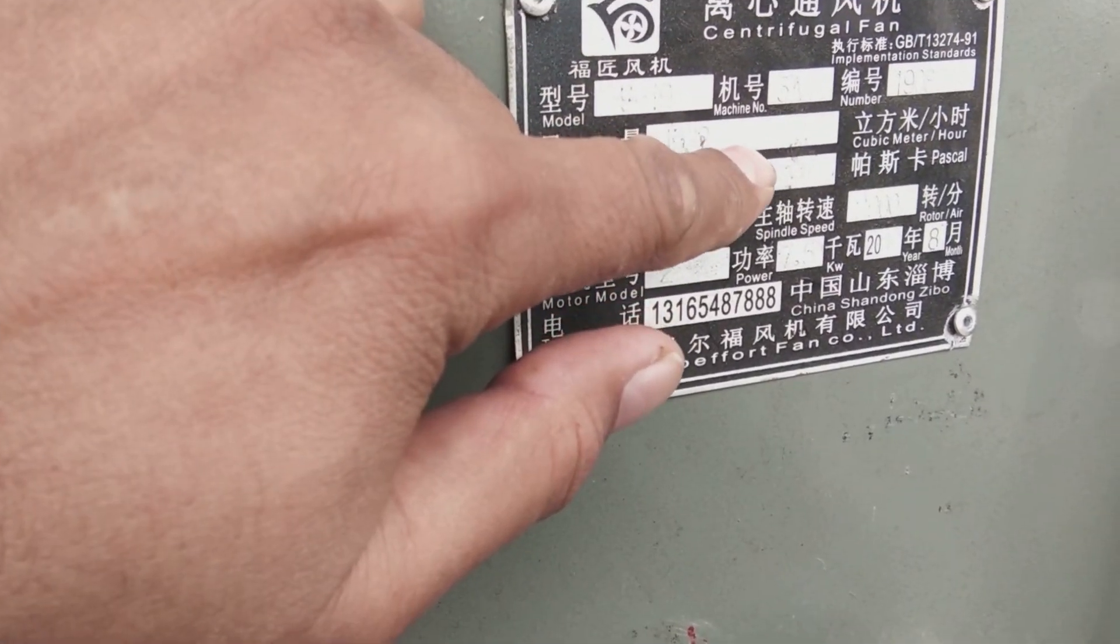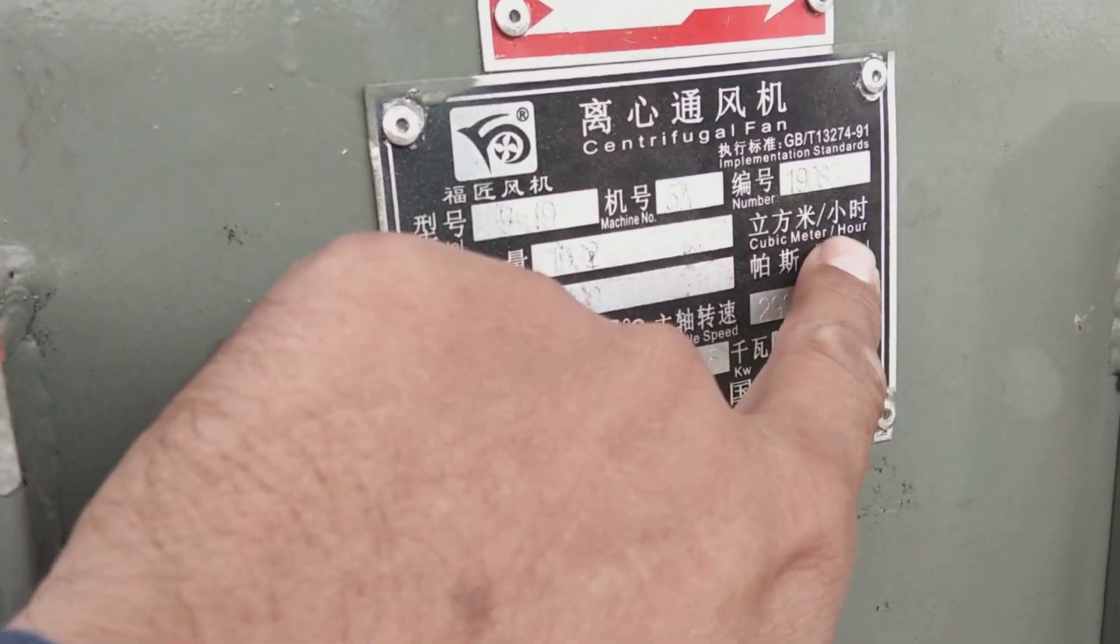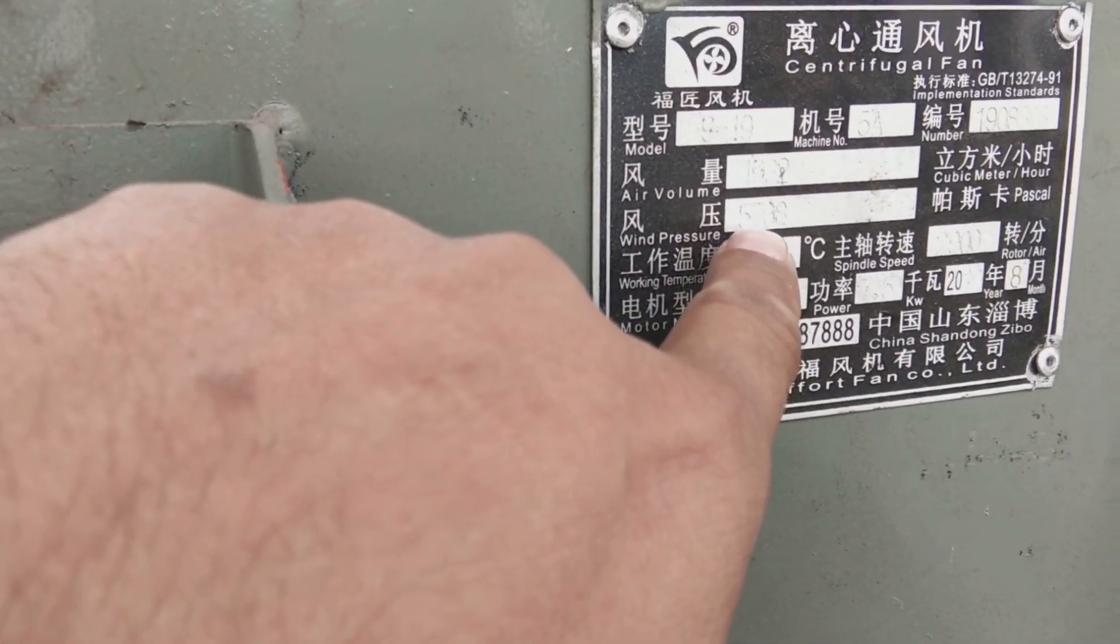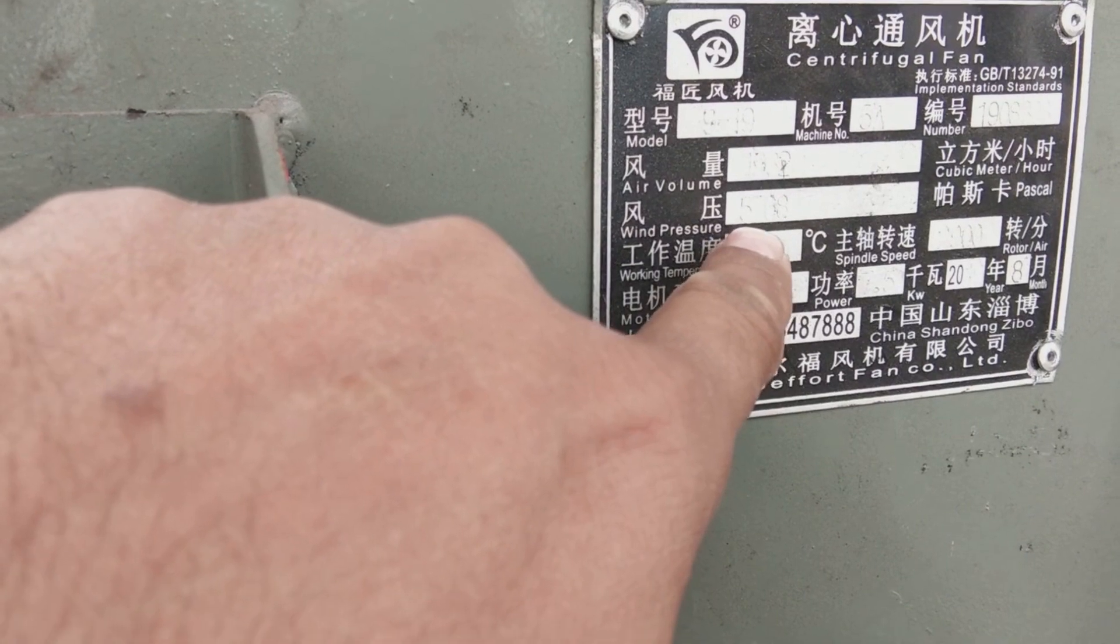The volume is here in cubic meters per hour - this is the capacity. Here is the Pascal rating, 1000 Pascal.